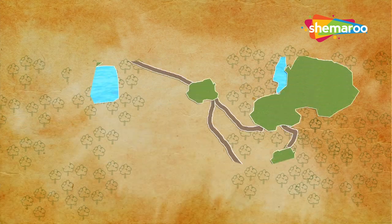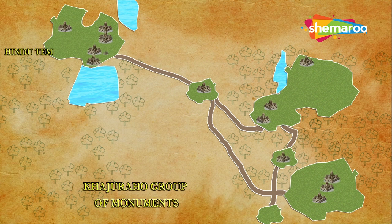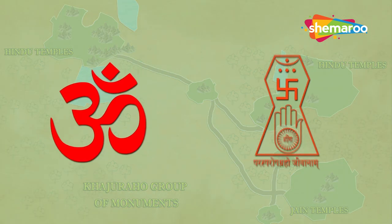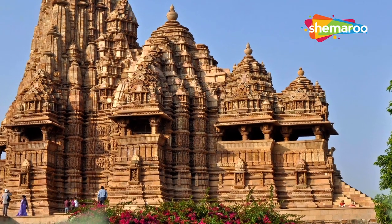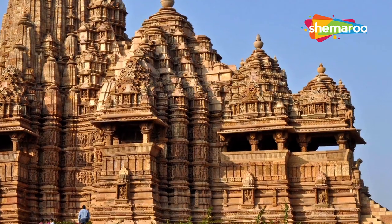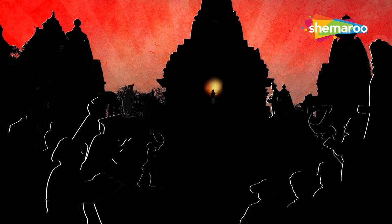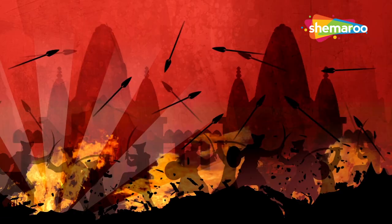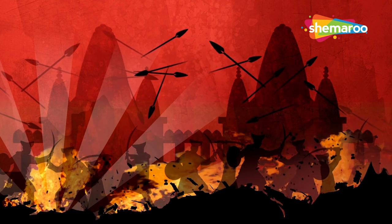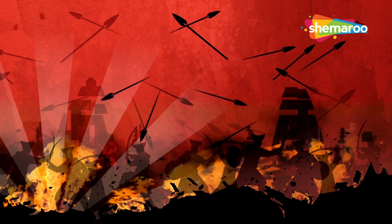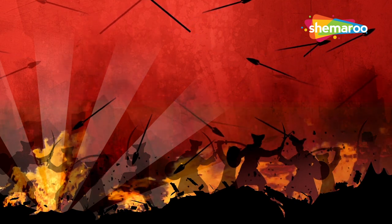It is said that a group of 85 temples were built, of which about 22 to 25 are still standing today. The temples belong to both the Hindu and Jain religions. The monuments at Khajuraho are a perfect balance of architecture and sculpture. The temples continued to have prominence until the 14th century but were forgotten with time. During the 12th to 14th centuries, a lot of temples were destroyed during various invasions and battles, most prominently the battles with the Delhi Sultanate.